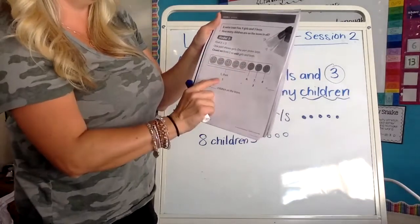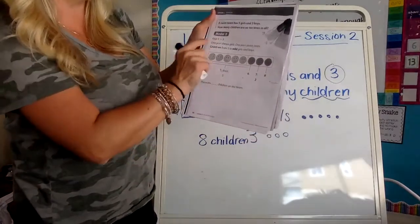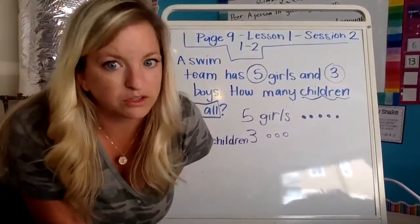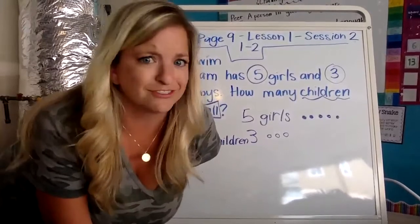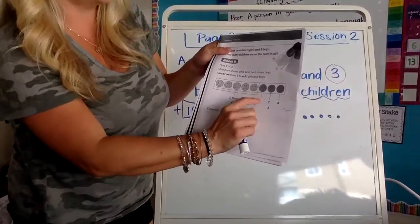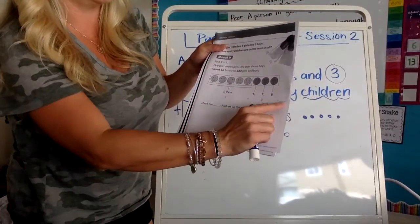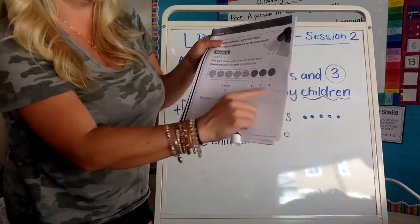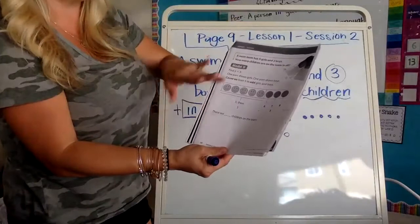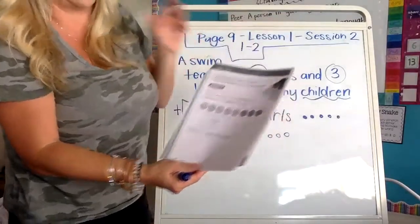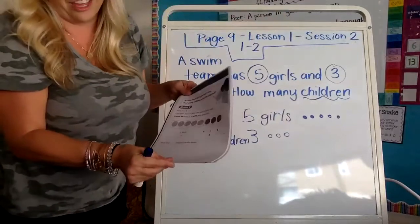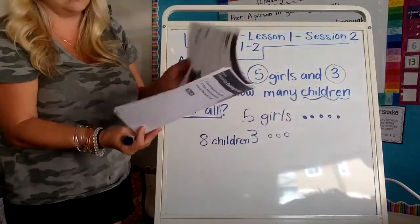Find five plus three. What part shows girls? What part shows boys? Count on from five to add girls and boys. So we know this is five because they told us five. There's an expression that says don't reinvent the wheel. They told you it's five. You don't need to count it again. So five, six, seven, eight, five plus three equals, you're going to put eight. There are eight children on the team. So on this page, you're just looking at the model. Again, a model is a fancy word for a drawing. That's it.